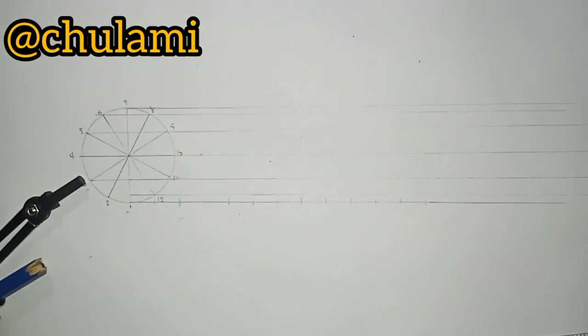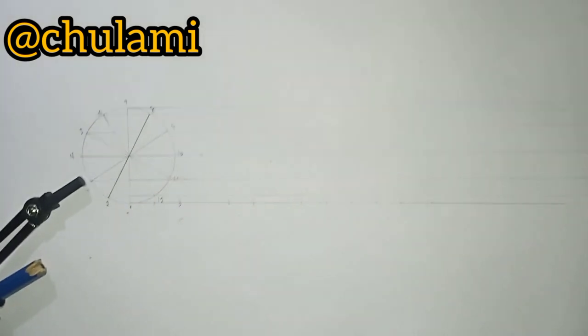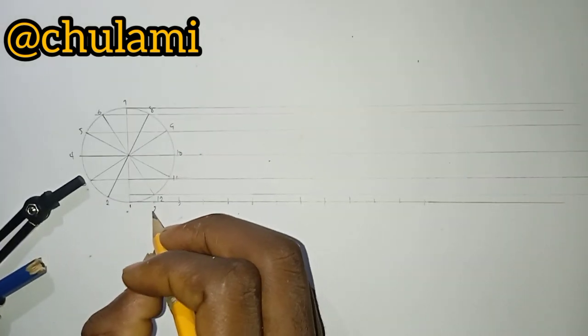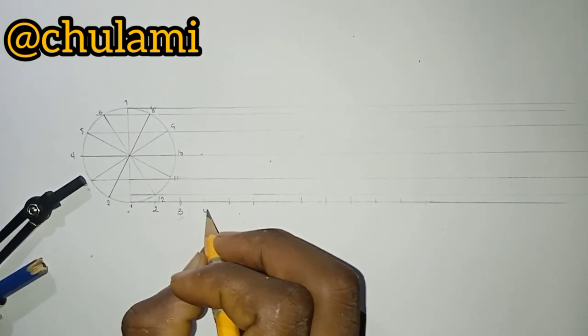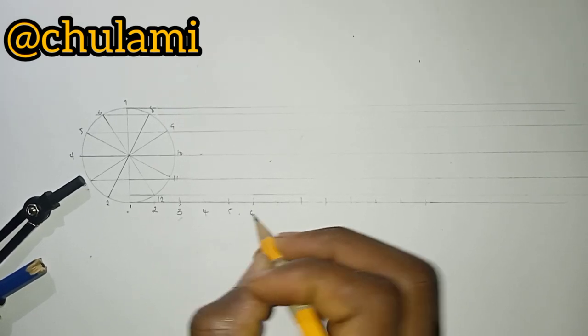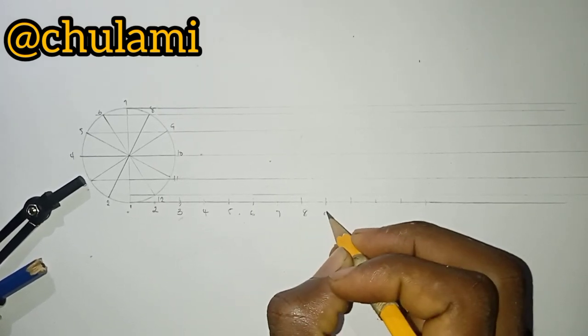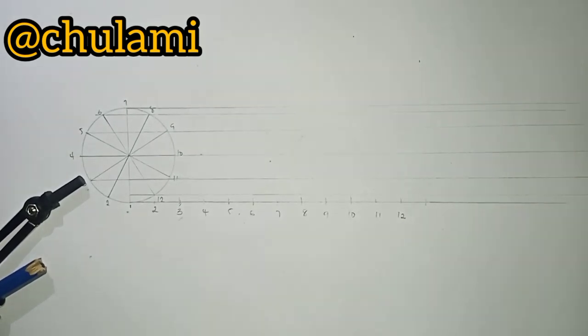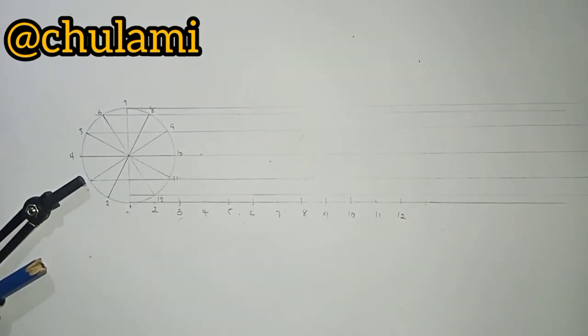Let's number the divisions. Start numbering: this is 1, then 2, 3, 4, 5, 6, 7, 8, 9, 10, 11, 12. This extra part I'm not using.